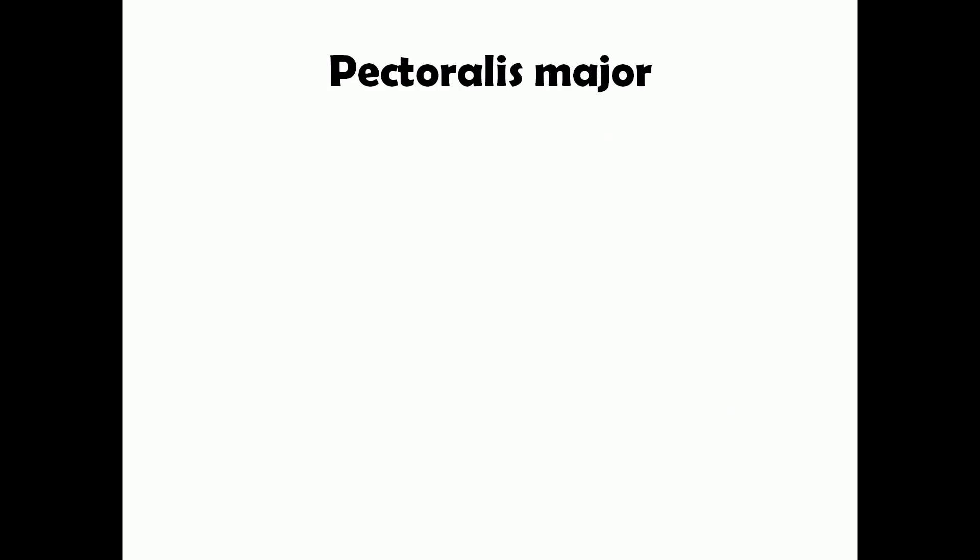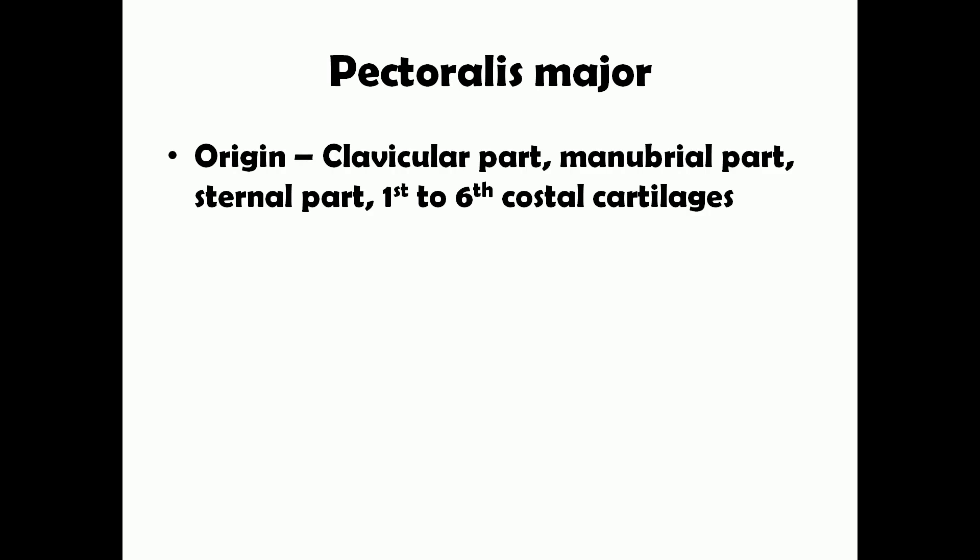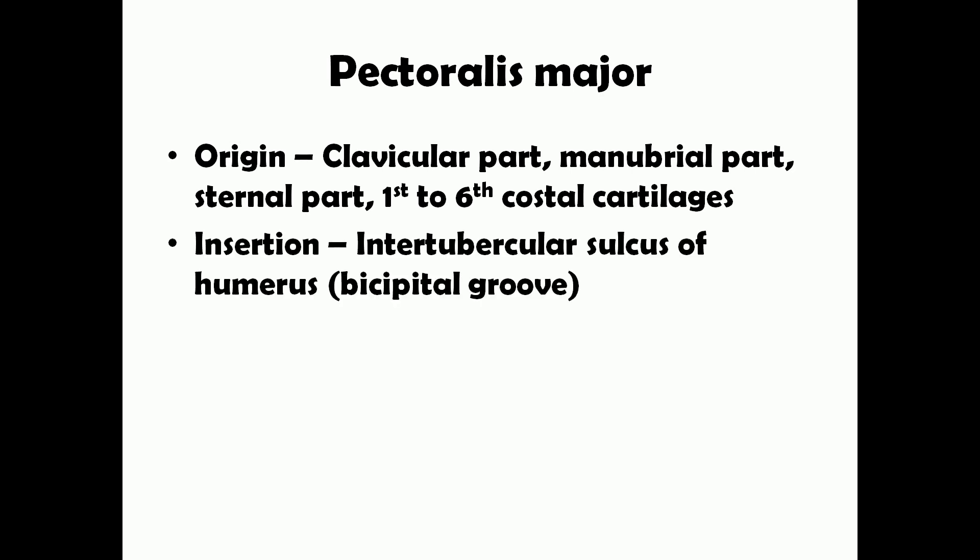First let's start our discussion by looking at pectoralis major. The pectoralis major has various origins. It originates from the clavicle, and a few fibers arise from the manubrium. It also arises from the sternum starting from the level of the first to sixth ribs, and from the first to sixth costal cartilages. All these fibers join and insert into a sulcus known as the intertubercular sulcus of the humerus, which is present between the greater and lesser tubercles. This sulcus is also known as the bicipital groove.